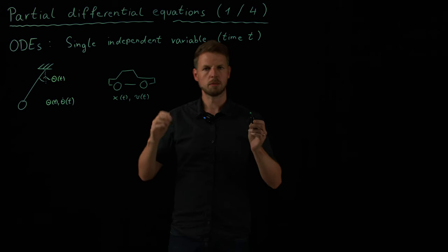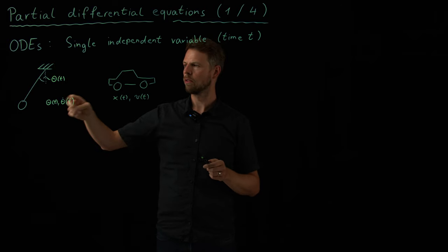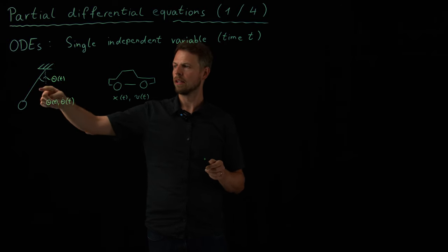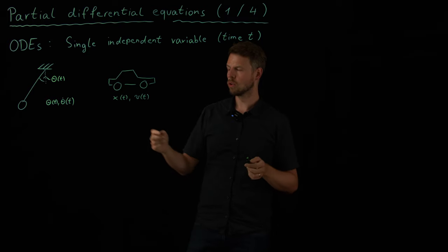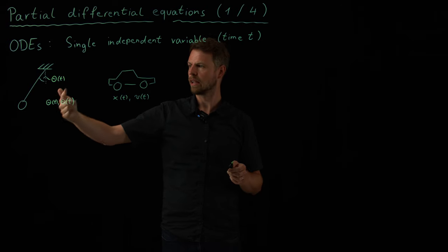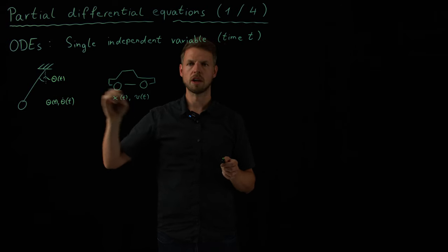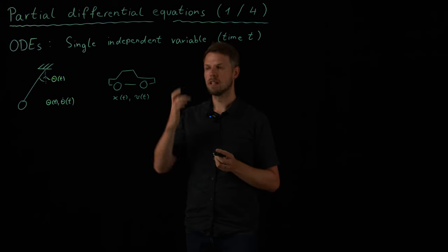And so if you think about these two examples, you have this pendulum that we have already seen. This is swinging back and forth. We have the angle theta as a function of time. So the system state is described by the angle, which is a function of time, and the angular velocity, which is also a function of time. So only one independent variable.